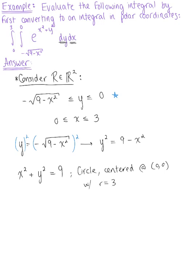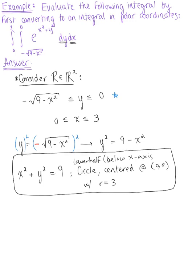We should be careful here — from the given equation, we have a negative in front, so it's not just a circle but the lower half of the circle, below the x-axis. We also want to be mindful of our x bounds: we're only working from 0 to 3. So our region R is below the x-axis, only in quadrant 4. This bounding curve is y equals minus the square root of 9 minus x squared.